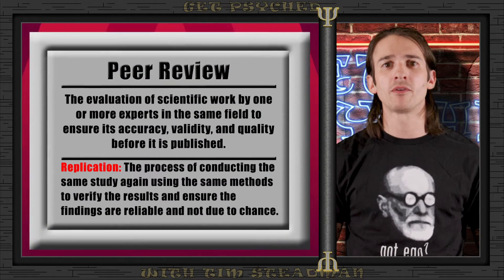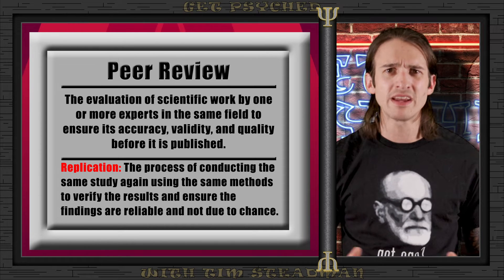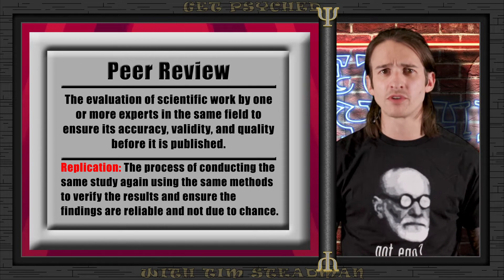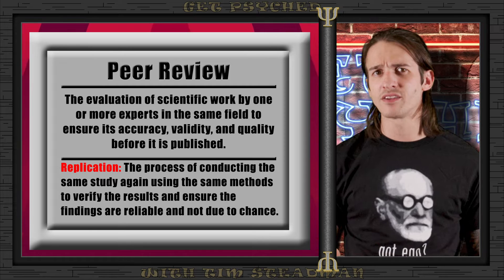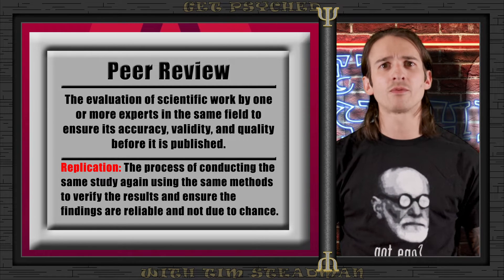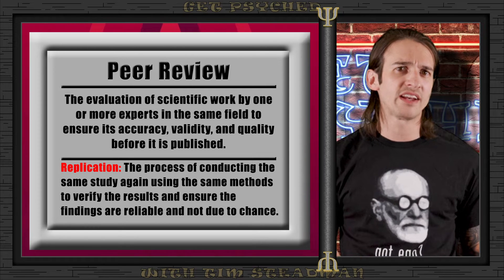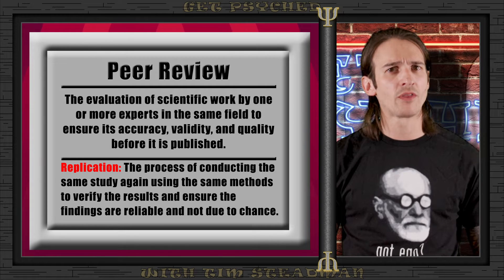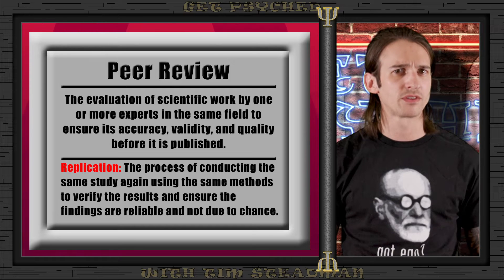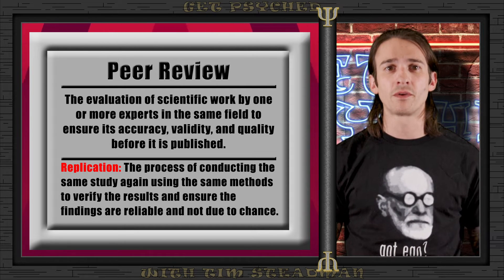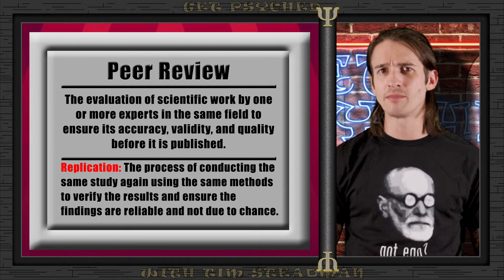Once our research is complete, it can be peer-reviewed — when other experts in psychology take a close look at the study to make sure everything was done correctly. During peer review, experts check the appropriateness of the hypothesis, the research methodology, the accuracy of data analysis, and the research conclusions. If the study passes peer review, it can be published and replicated. Replication is when other researchers attempt to reproduce the results using the same methods to confirm findings are not just a one-time occurrence and can be reliably observed again under the same conditions.